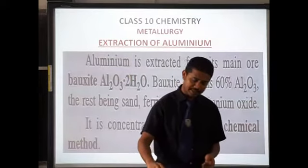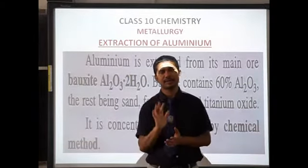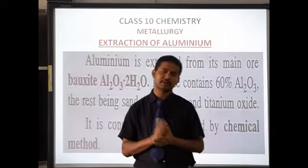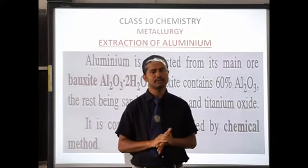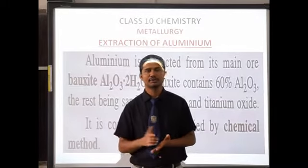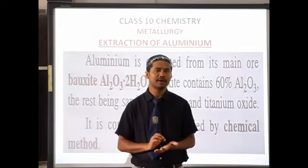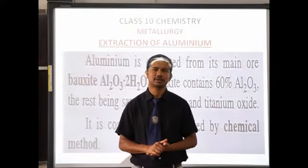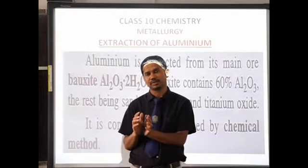For extraction of metals, there are five steps for all types of metals: number one, crushing and grinding; number two, concentration of ore; number three, oxidation of ore; number four, reduction of ore; number five, purification of metal. All extraction processes will have these five steps.